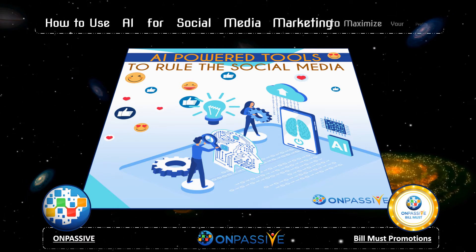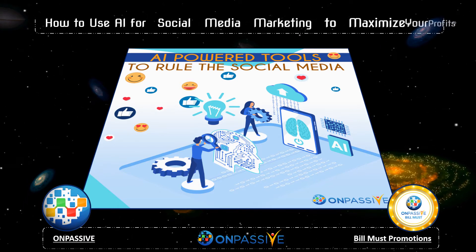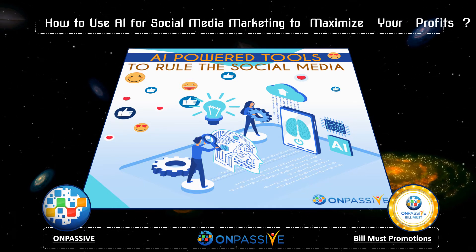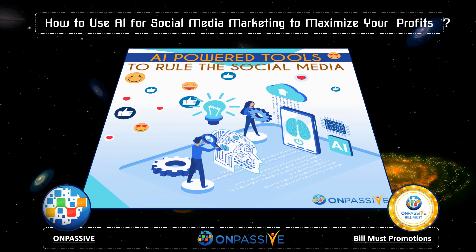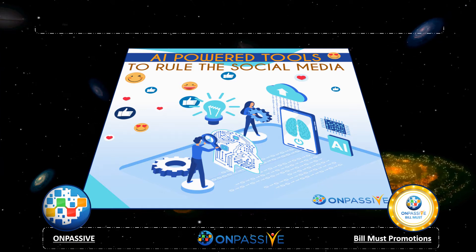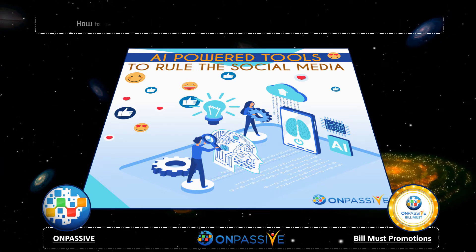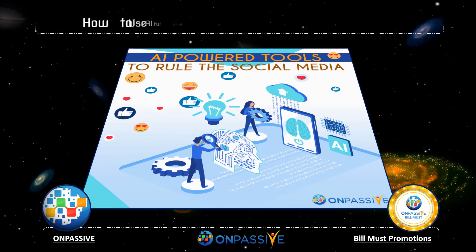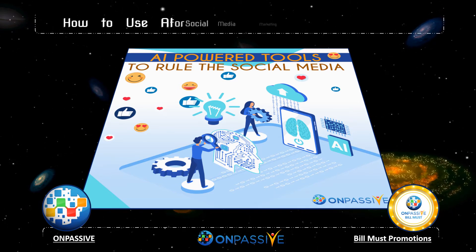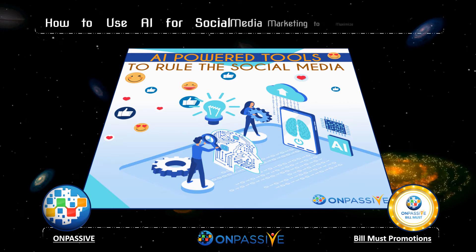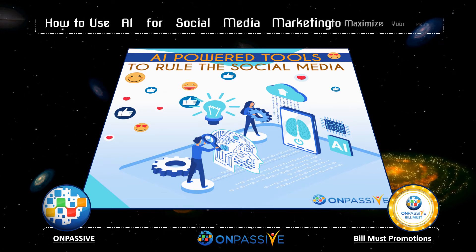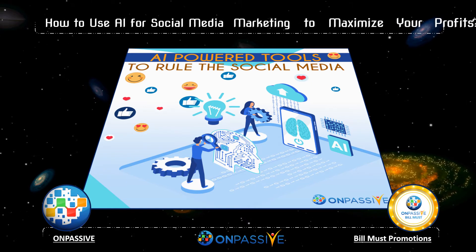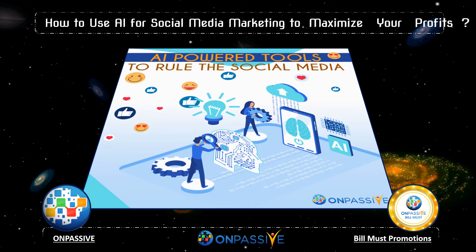AI has a ton of compelling use cases across various social media marketing channels, goals, and disciplines. Use case one: social creation and management. AI for social media and smart automation helps you to create shareable content for social media and then manage the distribution of that particular content.